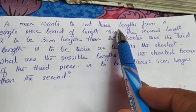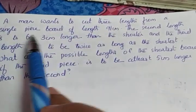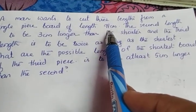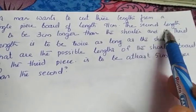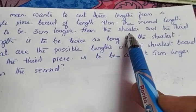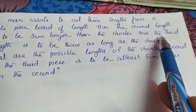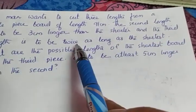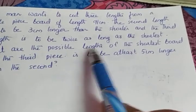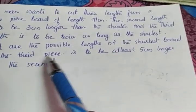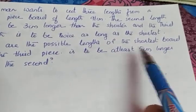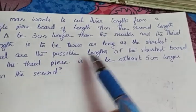A man wants to cut 3 lengths from a single piece board of length 91 cm. The second length is to be 3 cm longer than the shortest, and the third length is to be twice as long as the shortest. What are the possible lengths of the shortest board if the third piece is to be at least 5 cm longer than the second?